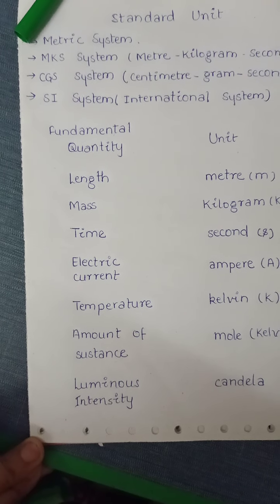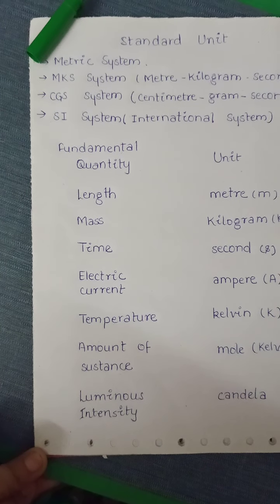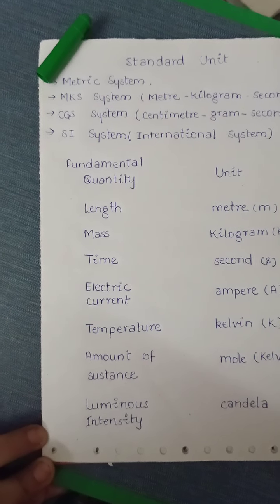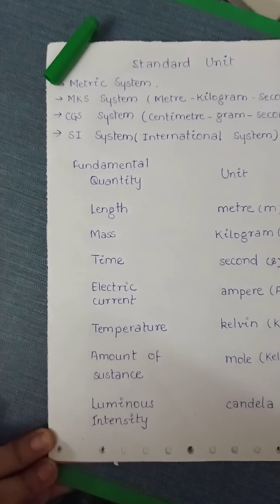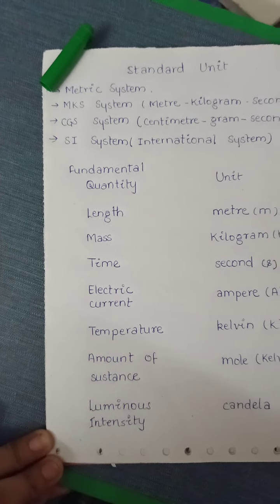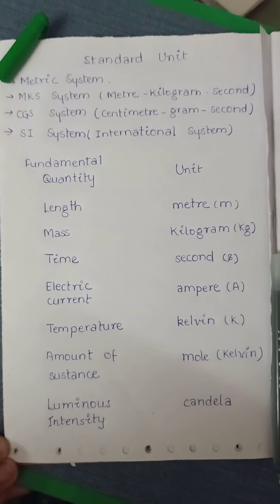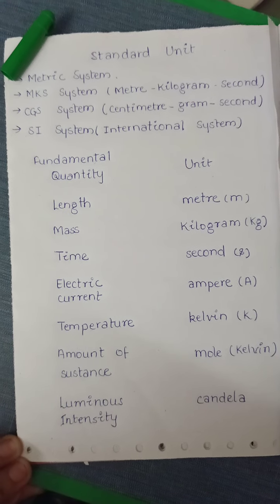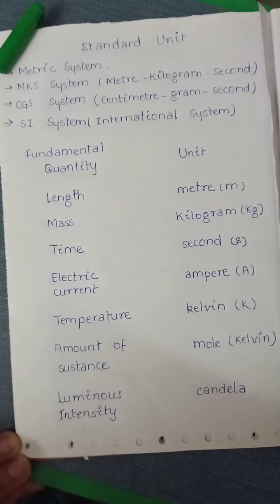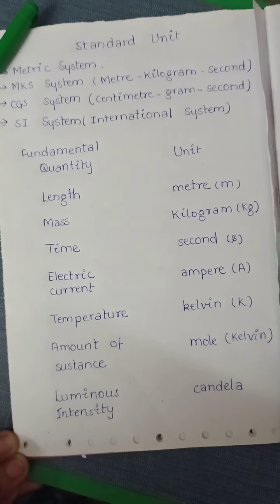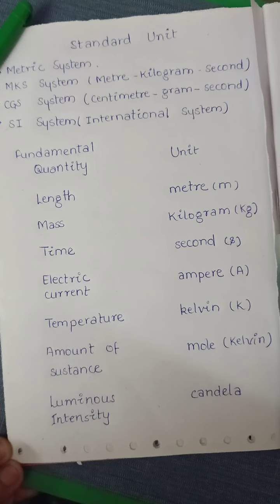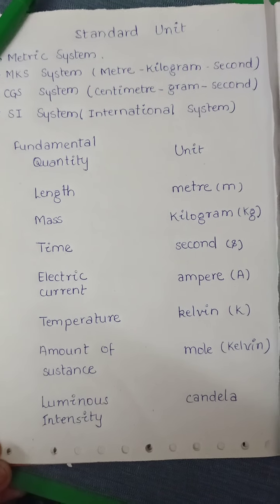Standard unit. What do you understand by standard unit and why we use standard unit? The traditional units were not uniform, as the length of foot and hand span varied from person to person according to their body size. These units could not be used for scientific measurement where accuracy was a prime concern. Therefore, people felt the need to have standard units which could be used for accurate measurement and could be accepted universally.